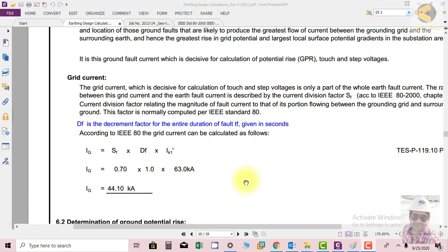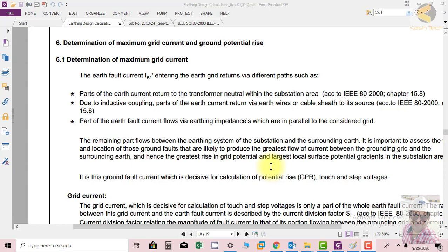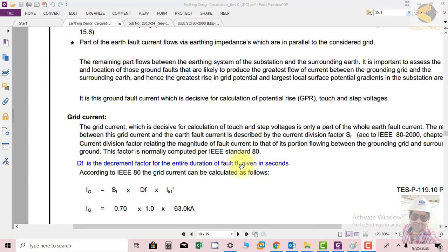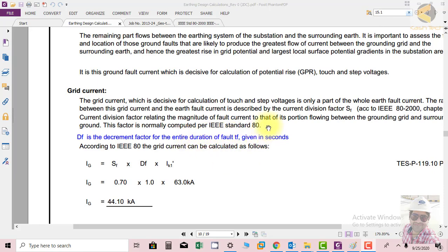Welcome to part 2. We were calculating the determination of maximum grid current. We have seen the formula which has been taken from IC triple 1 80.